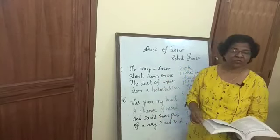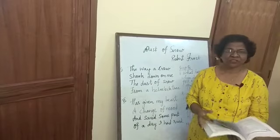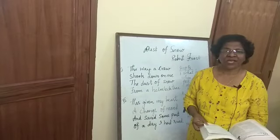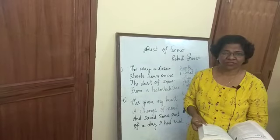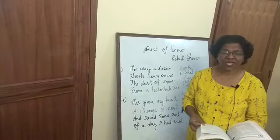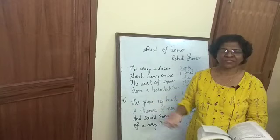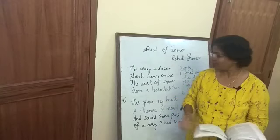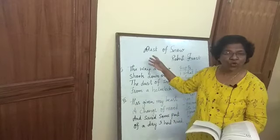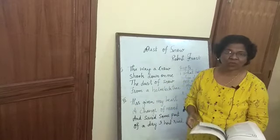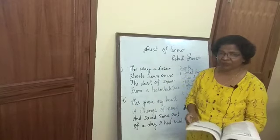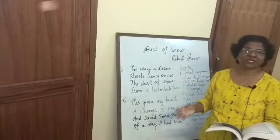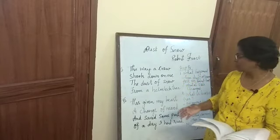Robert Frost mentions natural things and he expresses his ideas regarding the crow and the hemlock tree. There are two stanzas in this poem.